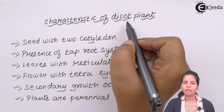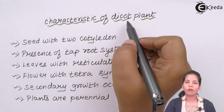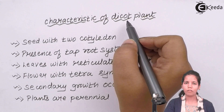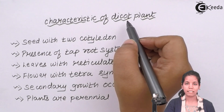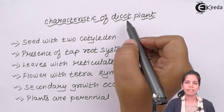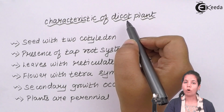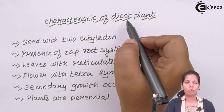Dicot plants — rice is not a dicot plant, it is a monocot plant. When I talk about dicot plants, when you break that plant seed, it has to be divided into two different parts — that is a dicot plant. Toordal, moong, matki — all those are dicot. Wheat is also not a dicot seed, it is a monocot seed. So all dicot plants have certain characteristics in common.